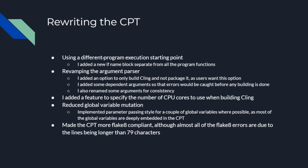My first improvement was making a different program execution starting point — I added a new if-name block separate from all the program functions. I then revamped the argument parser, which made the user experience more friendly. I added an option to only build Cling and not package it, as users in the community wanted this option for a while, and I added dependent arguments so that errors would be caught before any building is done. I also renamed some arguments for nomenclature consistency.